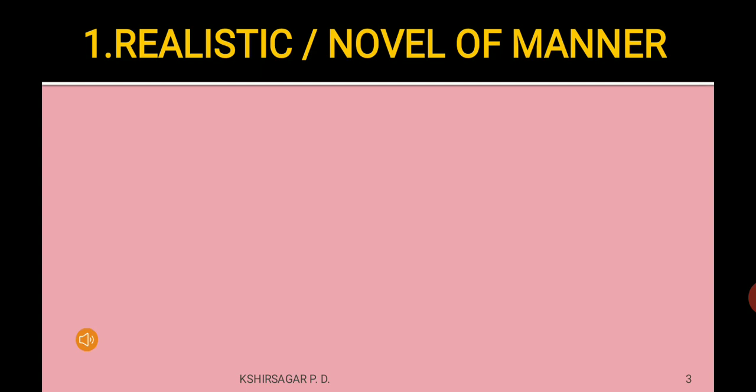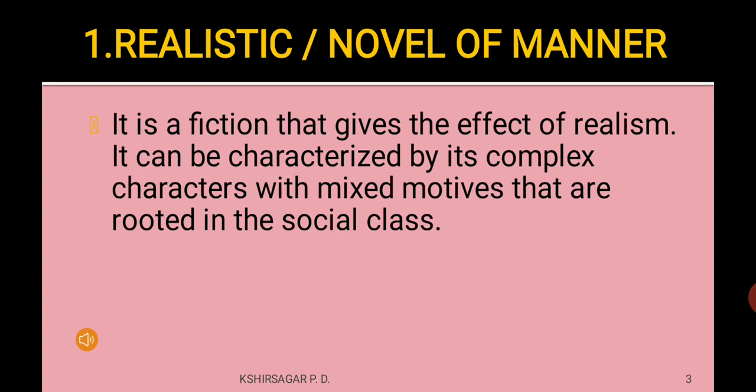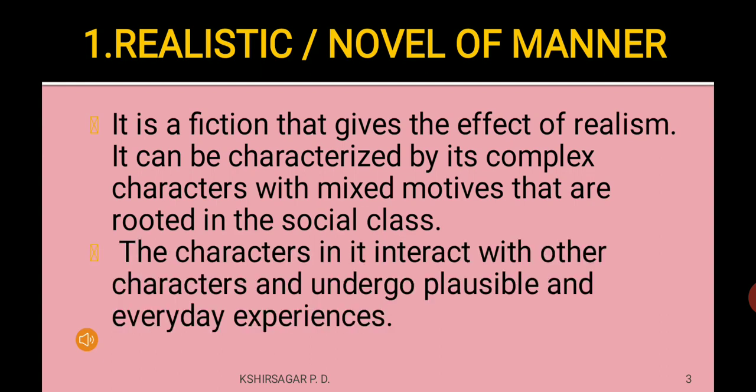The first type is the realistic novel, also called novel of manners. It is a fiction that gives the effect of realism. It can be characterized by its complex characters with mixed motives that are rooted in social class. The characters interact with other characters and undergo plausible and everyday experiences.